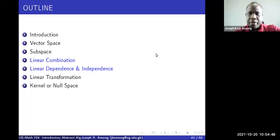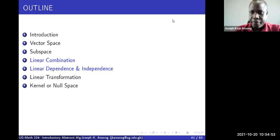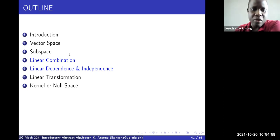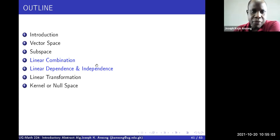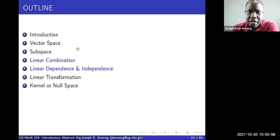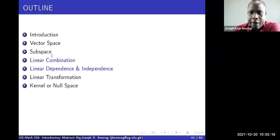Hello everyone, welcome to this lecture. We are going to start looking at the subtopics of linear combination and linear dependence and independence. In the last few lectures, we looked at vector spaces and some examples of that, and then in the last couple of videos, we covered subspaces and examples of subspaces. There was a theorem that was very important to be able to show that a given subset is a subspace.